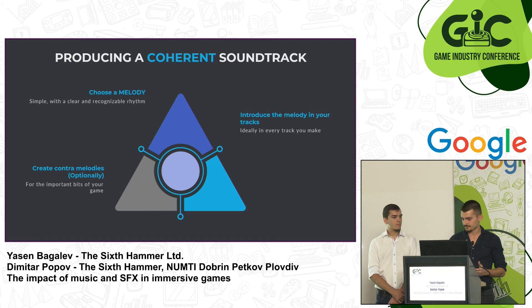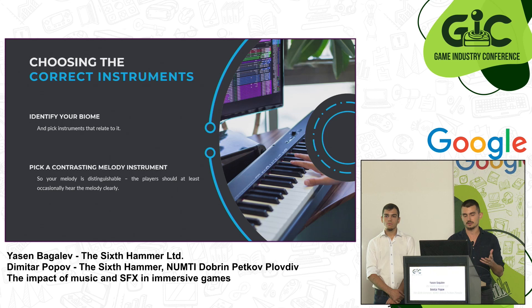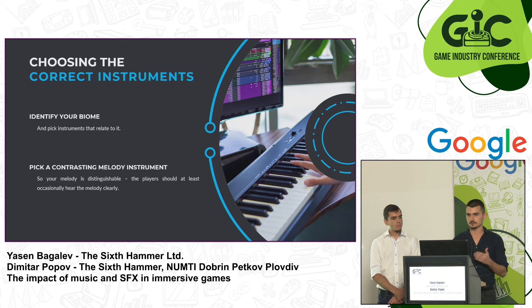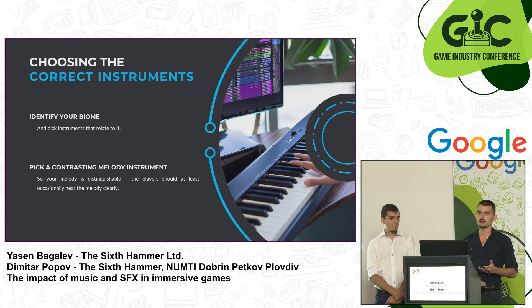How to choose instruments when composing a particular track? You should identify the biome where the track plays out. For example, if you make a track for a cave terrain, you can choose instruments that play more distinctive notes, like pianos or marimbas — they will imitate the roughness of the terrain. Also, you should pick a contrasting instrument for the melody. The melody should be heard very clearly at least from time to time. That will make it stick in the heads of the players — you want them to whistle it after they finish playing your game.